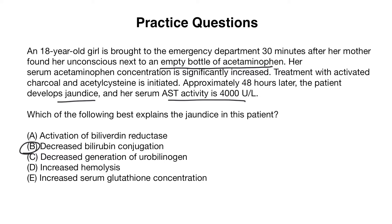Answer choice A is activation of biliverdin reductase. If you remember from our previous diagram, this enzyme is responsible for heme breakdown, which is derived from hemoglobin. These are situations that we would see with something like hemolytic anemia, and this is a pre-hepatic cause of jaundice. So this would not fit the picture represented here, and A is incorrect.